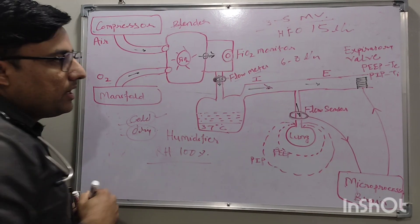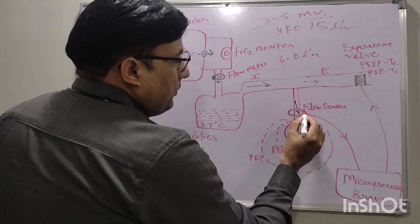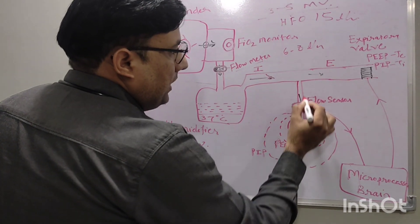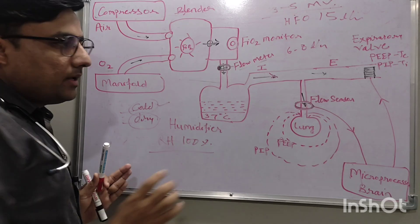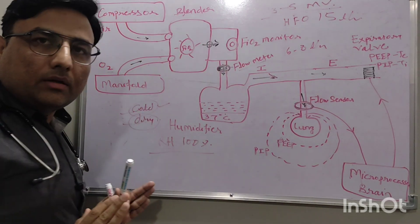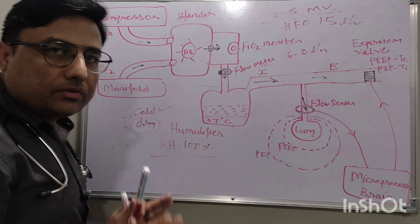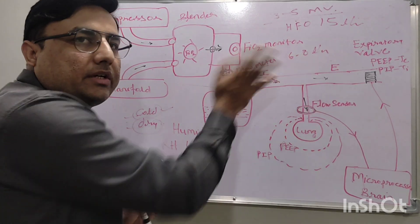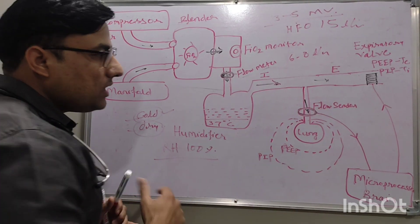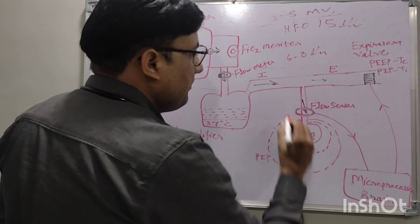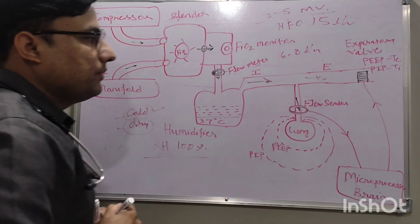After heating and humidifying, the gases go to the inspiratory limb of the circuit and then to the baby. Between the ET tube and the Y-piece we connect one flow sensor that measures the flow or volume of gases going to the baby and coming out of the baby. The flow sensor measures flow which is converted to volume, measuring inspiratory tidal volume and expiratory tidal volume. So near the Y-piece this flow sensor is placed to measure flow or tidal volume, and after that gases go to the lung.